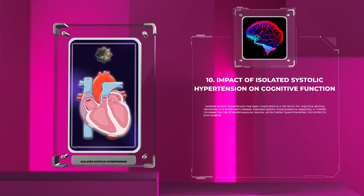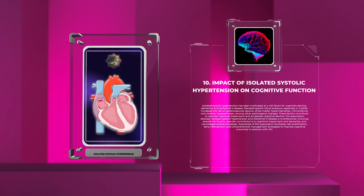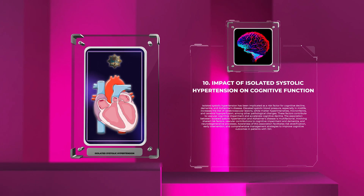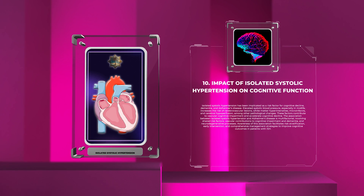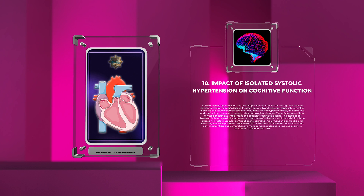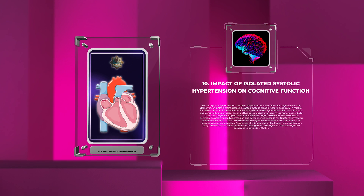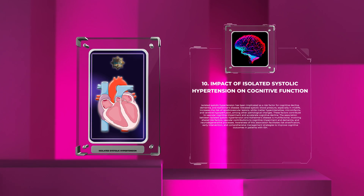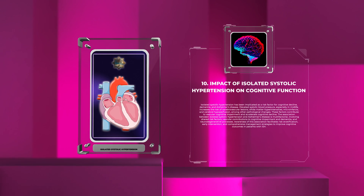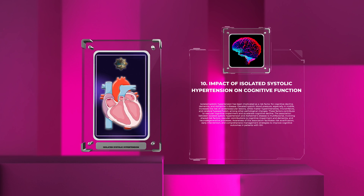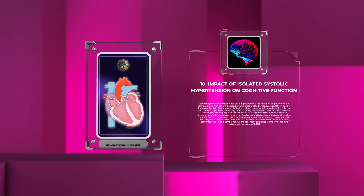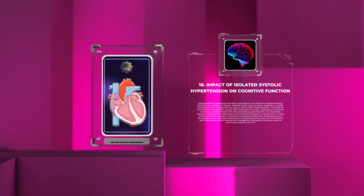Isolated systolic hypertension has been implicated as a risk factor for cognitive decline, dementia, and Alzheimer's disease. Elevated systolic blood pressure, especially in midlife, increases the risk of cerebrovascular lesions, white matter hyperintensities, microinfarcts, and cerebral hypoperfusion, among other pathological changes. These factors contribute to vascular cognitive impairment and accelerate cognitive decline. The association between isolated systolic hypertension and Alzheimer's disease is multifactorial, involving shared risk factors, vascular contributions to cognitive impairment and dementia, and neurodegenerative processes. Awareness of this association facilitates risk stratification, early intervention, and comprehensive management strategies to improve cognitive outcomes in patients with ISH.